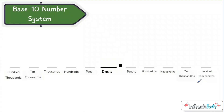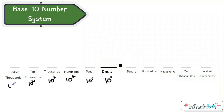Just a quick recap. We have our base ten number system, and our base ten number system is all based on powers of ten. If you need a recap, please check out our Understanding Place Value lesson. We have all these place values right here that are all based on powers of ten.